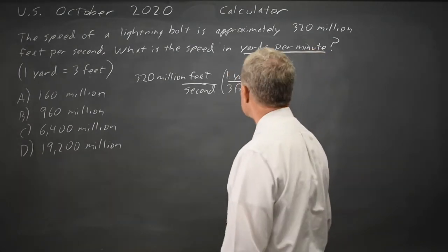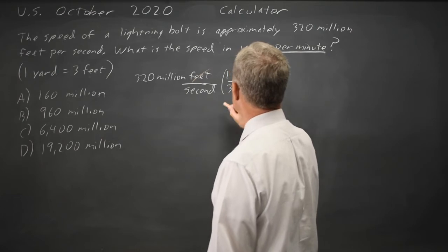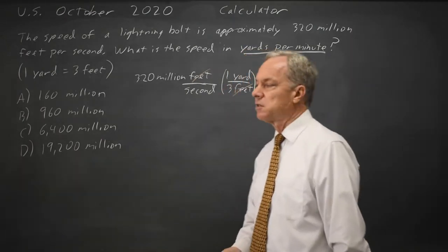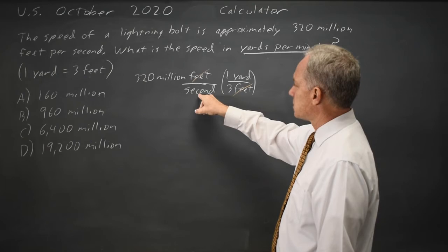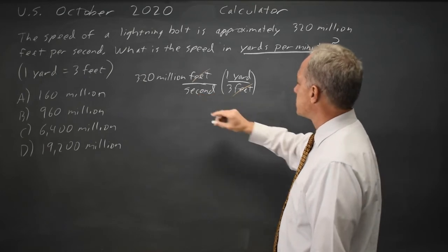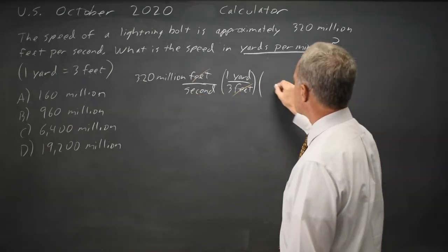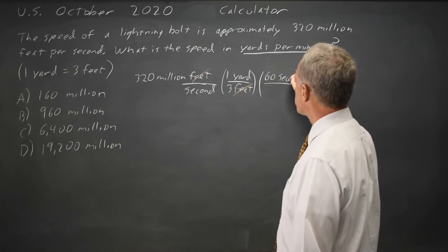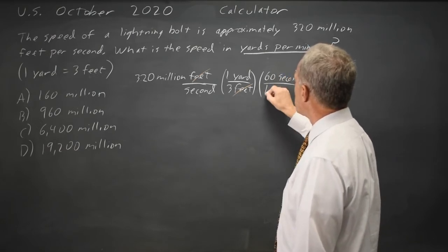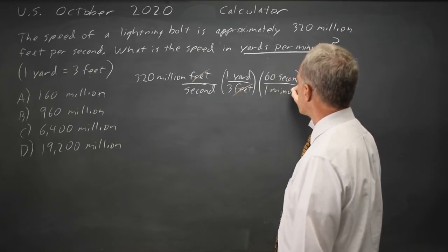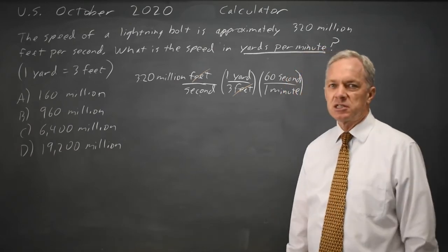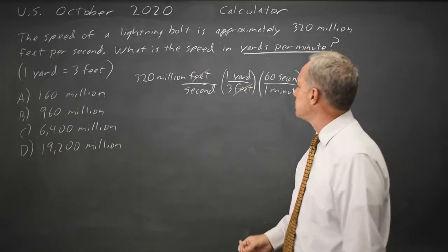The feet will cancel and that gives me yards per second but I want yards per minute. So I'm going to cancel seconds. To cancel seconds I want seconds in the numerator and I want an expression equal to 1 so that would be 60 seconds equals 1 minute. And again I'm multiplying by 1 so this does not change the value of my expression.